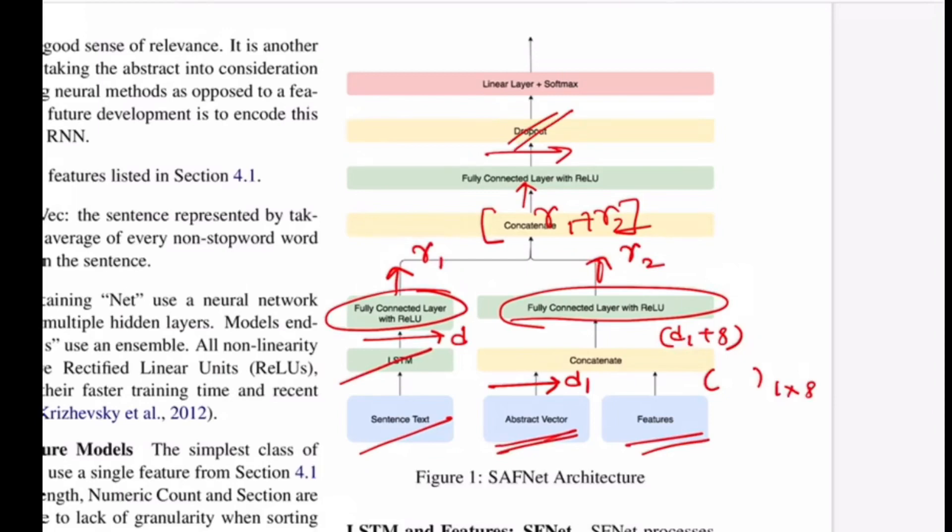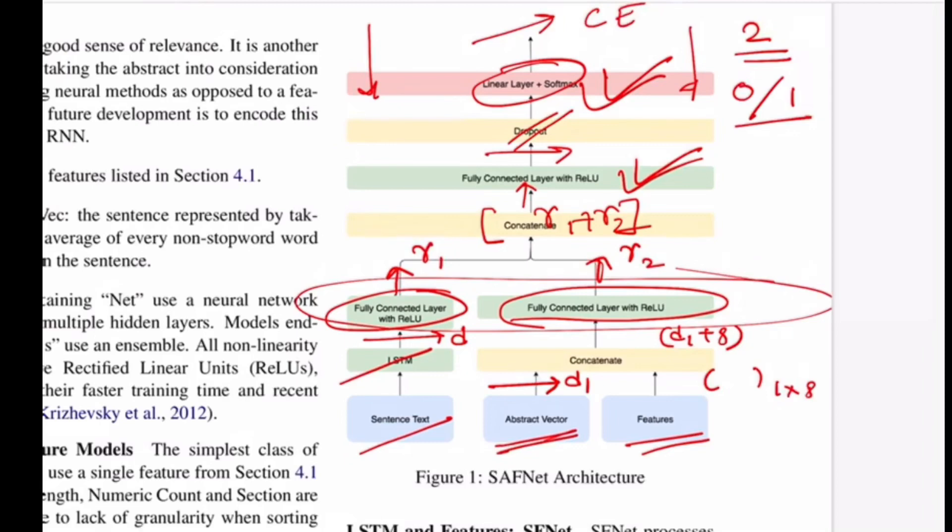As next step, you concatenate both of these things. You have R1 plus R2 representation. You pass it through a fully connected layer and get some representation at this point. Then you apply dropout to avoid overfitting, then pass it through a linear layer followed by softmax that gives you a distribution over two classes where zero is not extractive and one is extractive. Then you apply cross entropy loss and back propagate the loss to train the parameters - the fully connected layer, the weights at these layers, and the weights of LSTM. These are the trainable parameters your model learns based on how accurate you were able to make the final predictions.